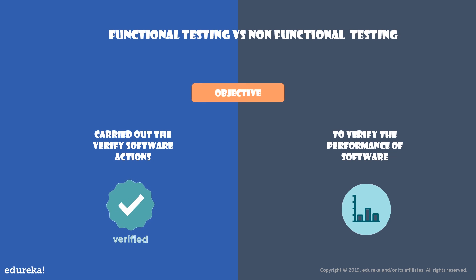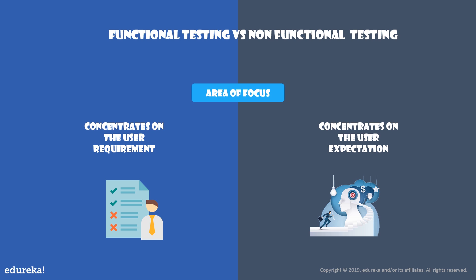Regarding their objectives: functional testing is carried out to verify or validate the software actions, like login functions, whereas non-functional testing helps in verifying or validating the performance of the software — that is, how the system performs under a given situation or condition. In terms of area of focus, functional testing mainly concentrates on user requirements — what functionalities take place — whereas non-functional testing concentrates on user expectations — how the system interacts with the user. Functional testing answers 'what,' while non-functional testing answers 'how.'